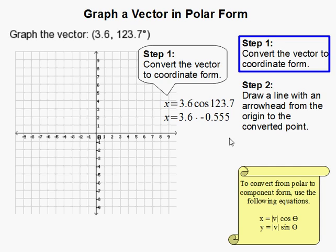So for the x, I did 3.6 times cosine of 123.7, figured out that cosine, and then there you go, so that's our x.